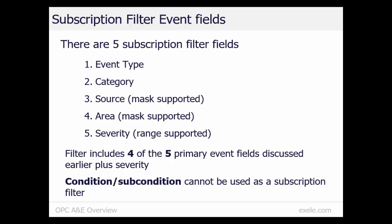Five event fields can be used in the filter: event type, category, source, area, and severity. Each filter field can specify one or more allowed values. The area and source fields support masks, where the allowed values can contain wildcards to match one or more characters. Severity is specified as an allowed range of values.